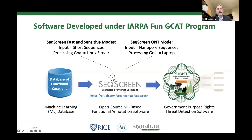We have the D-Cchange software in the middle, which is this open-source machine learning-based functional annotation software. And then we have S2CAS, which is the government-purpose threat detection software that Signature Science maintains. Christa can share any additional details there — but that's kind of where all of this stuff fits in if you've heard some of these terms thrown around.